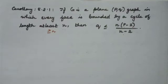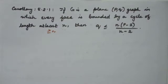Hello students. In this video we are going to see a corollary. The statement given is: if G is a plane graph in which every face is bounded by a cycle of length at least N, then Q is less than or equal to N times (P minus 2) divided by (N minus 2).